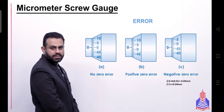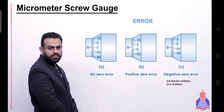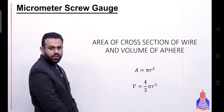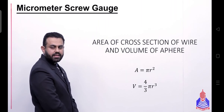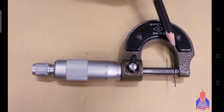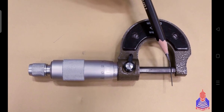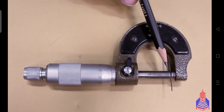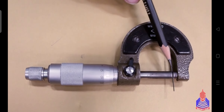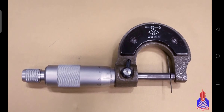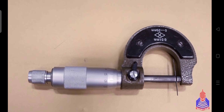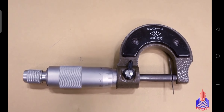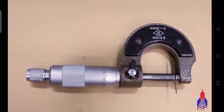Now we are ready to find the area of cross-section of a wire. Let's see how we use the micrometer screw gauge to measure the wire. There are two steps to reading the measurement.